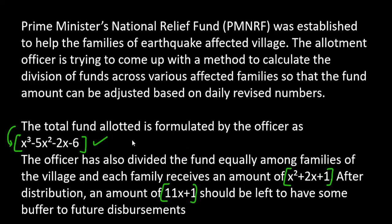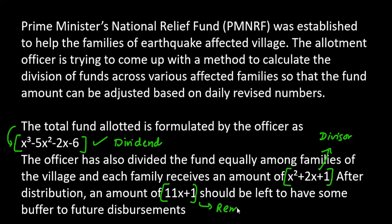First of all, you need to see who the dividend is, who the divisor is, and what the remainder is, and what will be the quotient. According to me, the total fund allotted is your dividend. The other thing is x² + 2x + 1 is your divisor. And we have the remainder. Now we have to use these three to solve further.